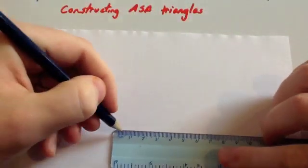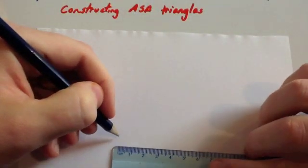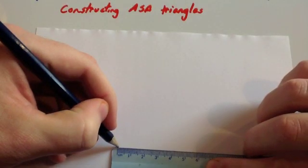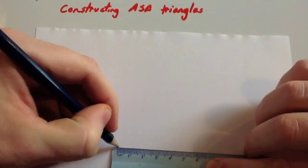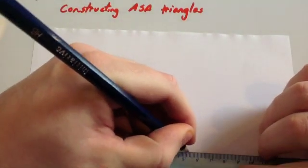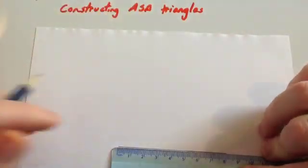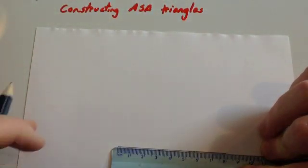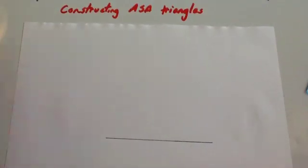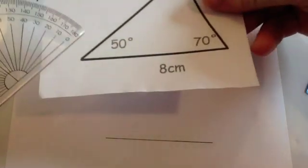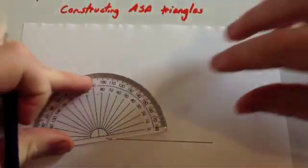Step one: draw the 8 centimeter line — make sure this is really accurate. Yes, exactly 8 centimeters. Now we've got a 50 degree angle on this side, so we'll put a protractor here.